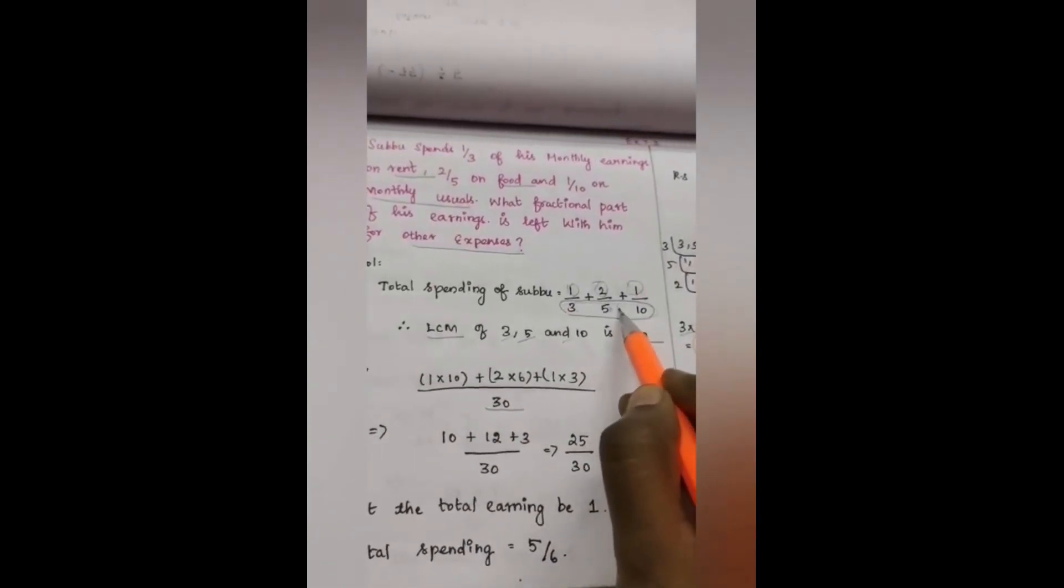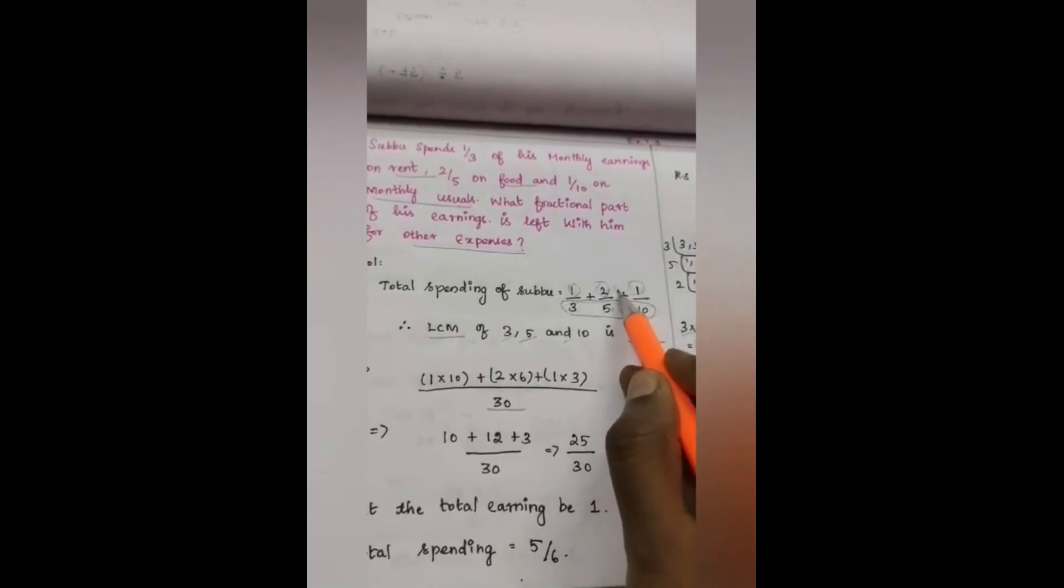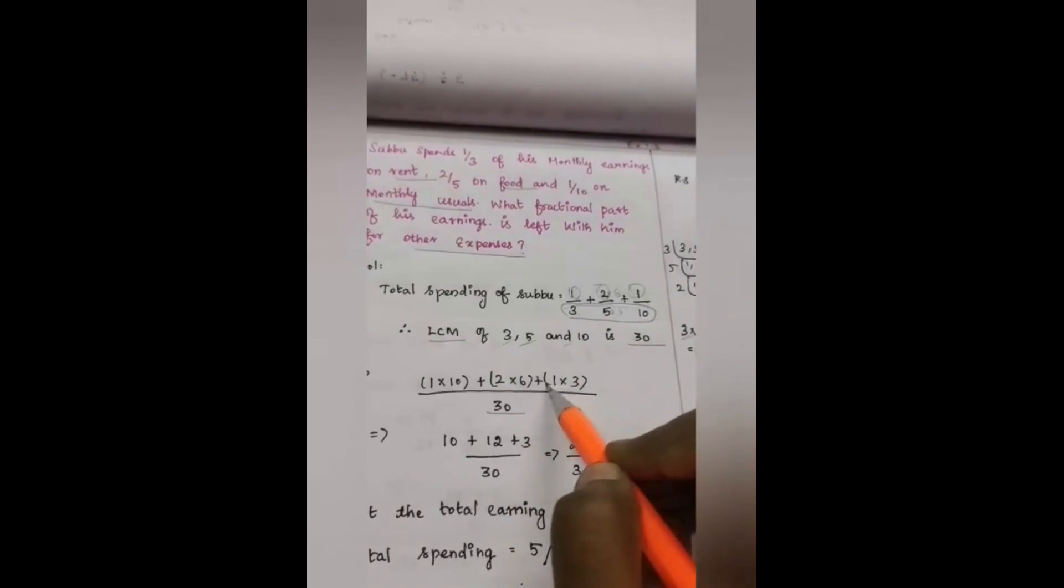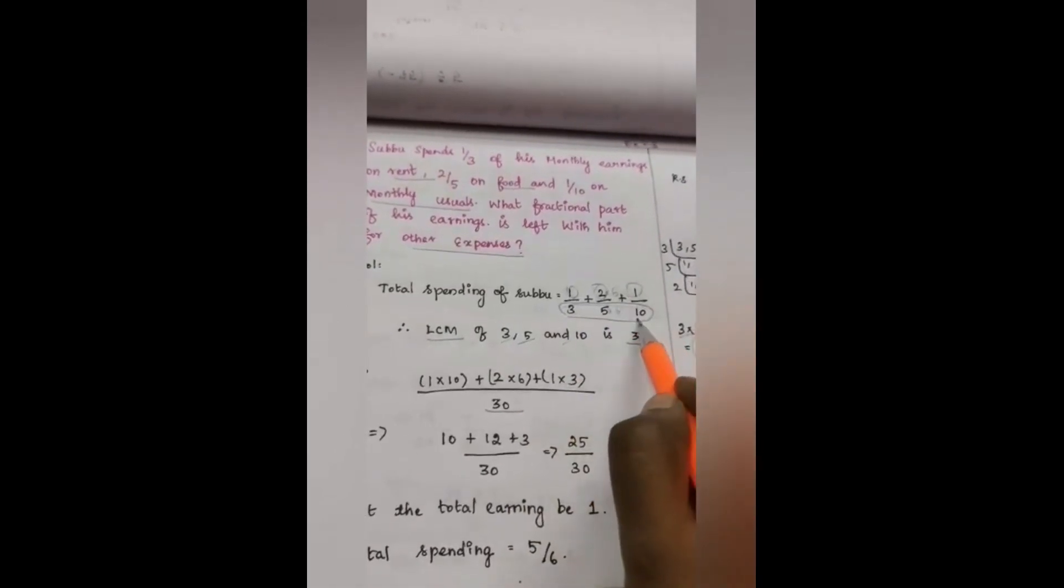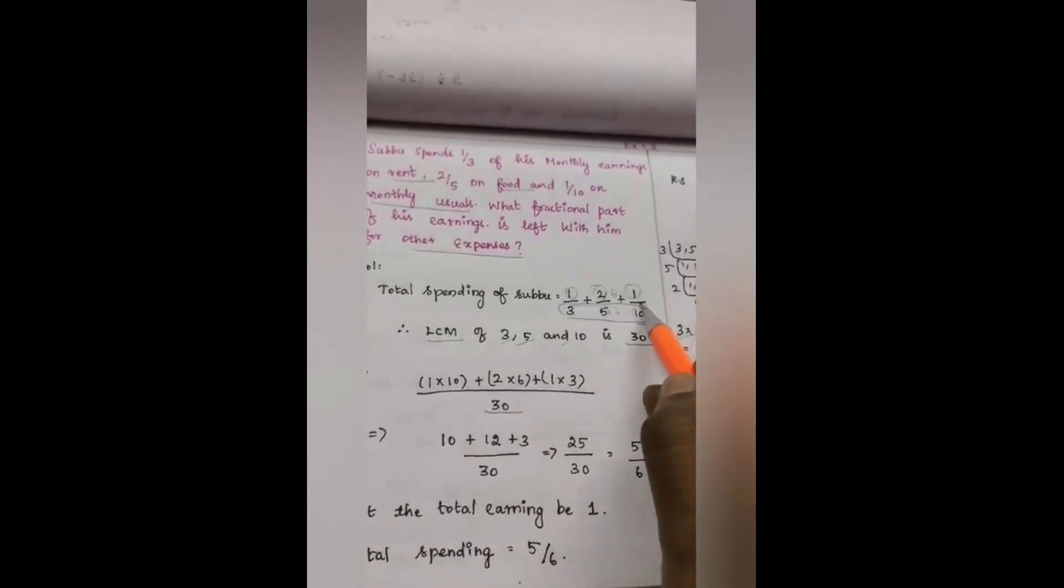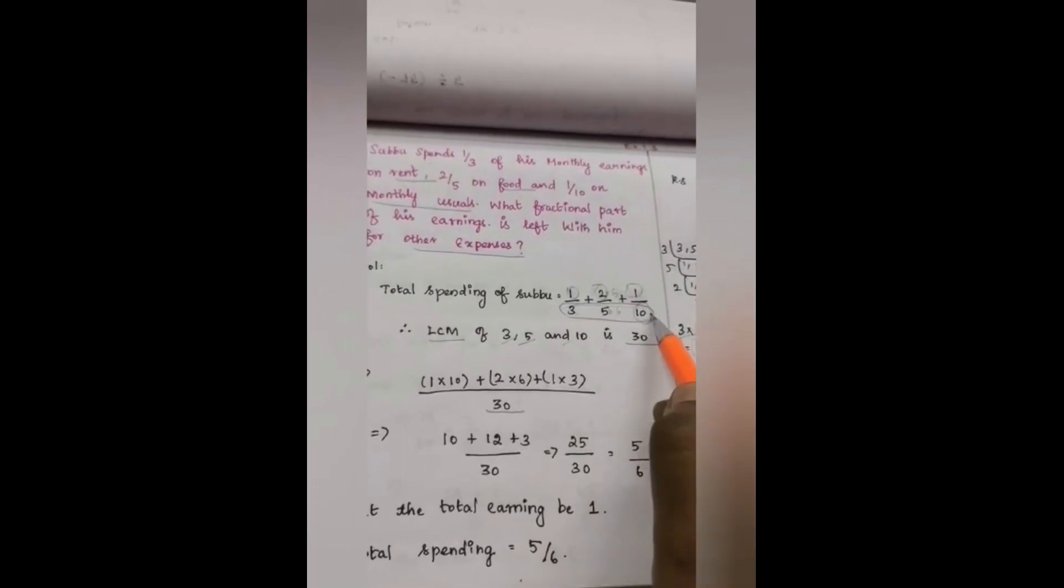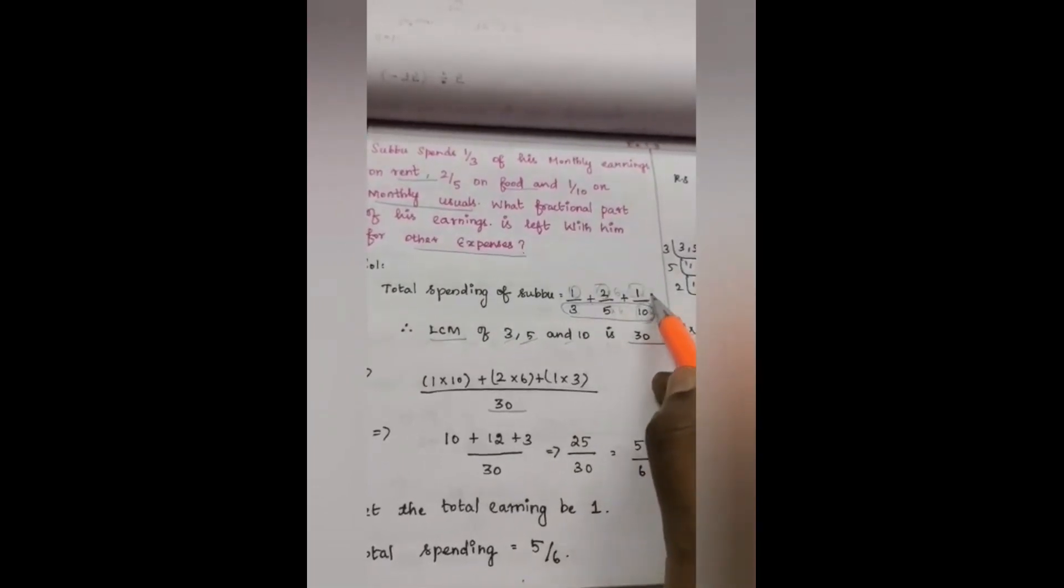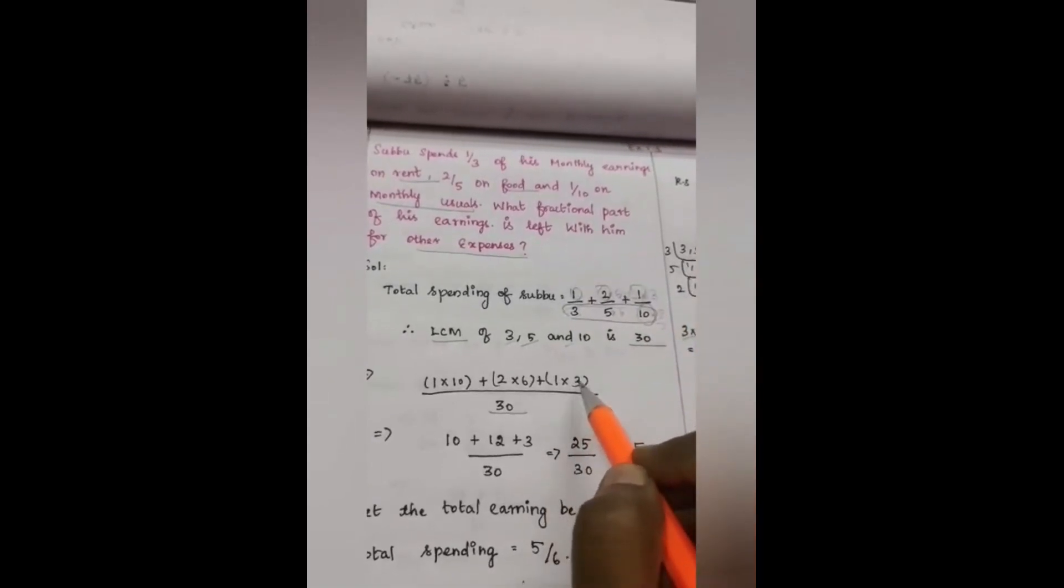Already we have denominator here as 5. 5 sixes are 30, so I am multiplying numerator with 6. 2 into 6, plus. Next, 1 into 3. Here we have denominator as 10. With the help of 3, it becomes 30. So here also I'm multiplying with 3. Therefore, 1 into 3.